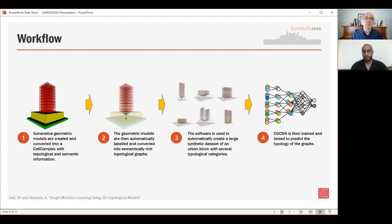As you can imagine, you can have four possible graph classifications: tower-on-ground, tower-on-podium, slab-on-ground, or slab-on-podium. So, the challenge for this workflow is to have the graph neural network correctly classify the urban block based on its graph representation.